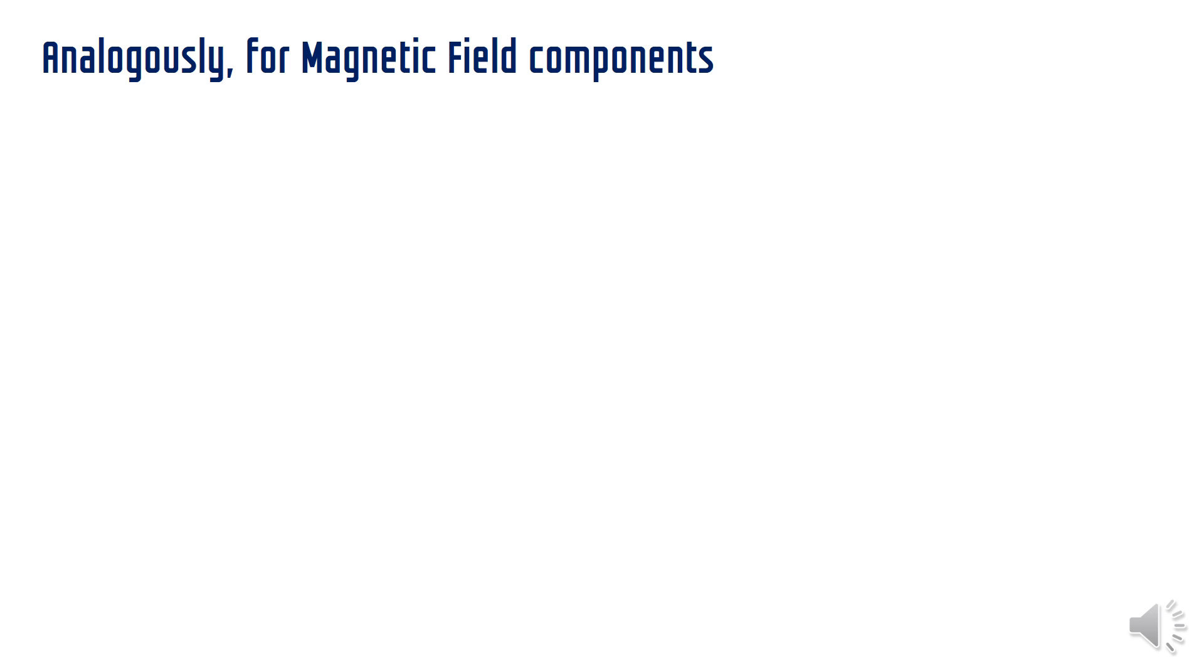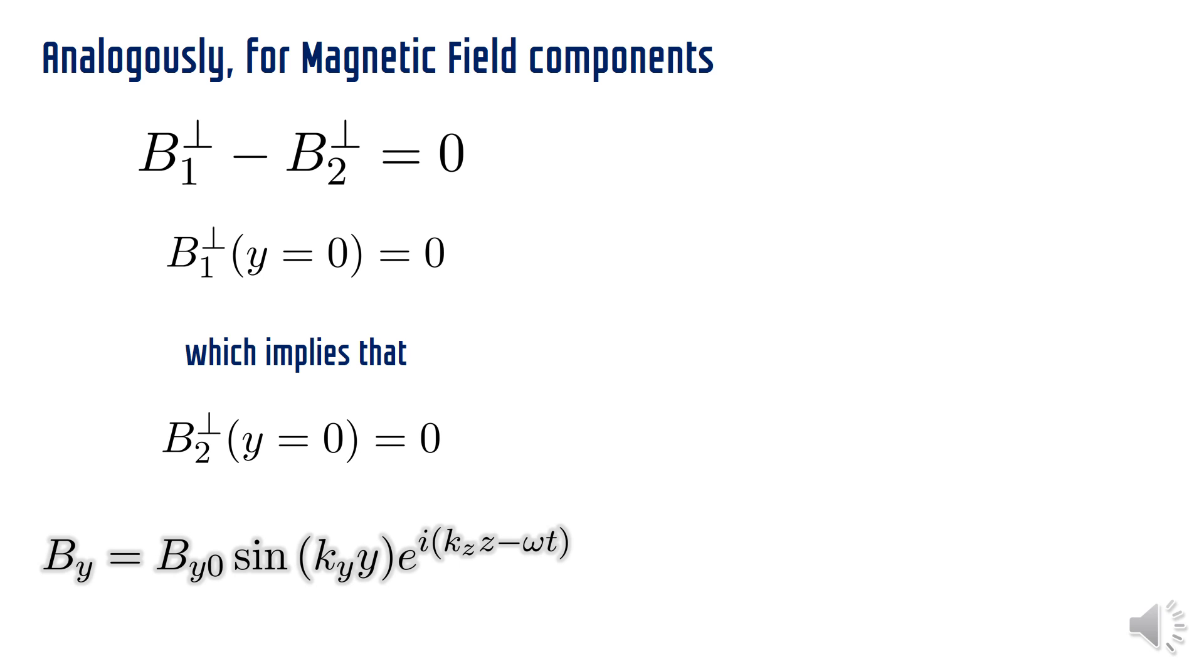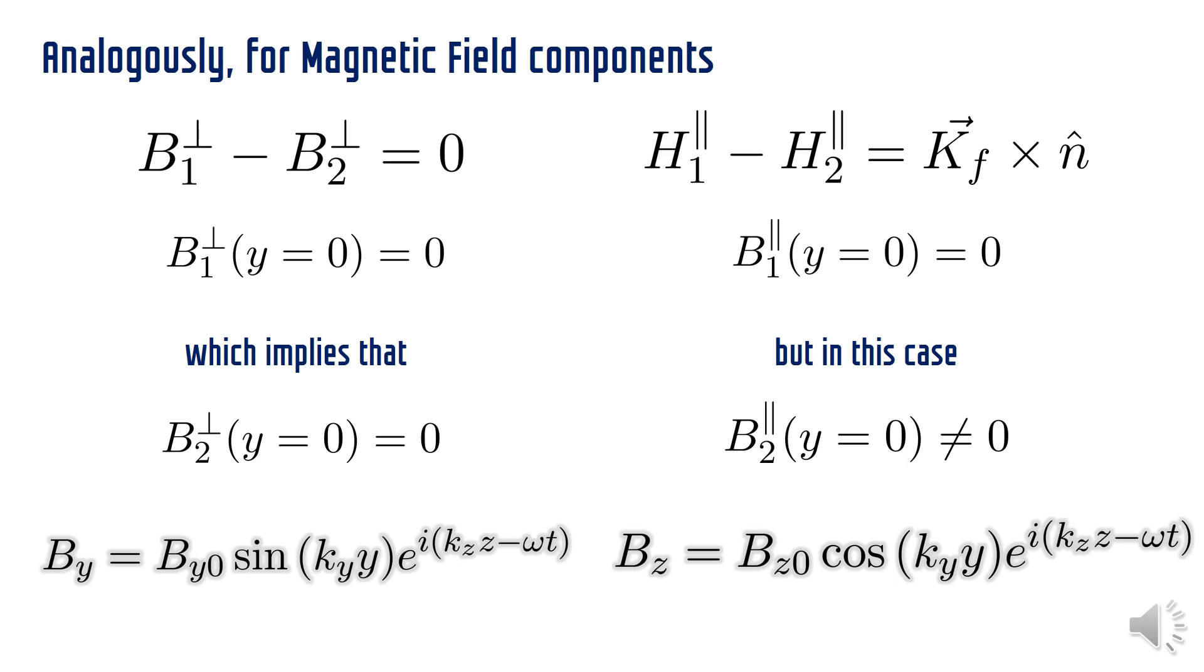Analogously we can find the expressions for the magnetic field as well. Again the magnetic field inside the metal is zero. From the boundary condition it is clear that the perpendicular component of the magnetic field would be zero at the interface leading to the expression that has been highlighted. From the last boundary condition the parallel component cannot be zero at the interface leading to this expression. We would like you to try to verify these results by using the method and calculations that we did previously.